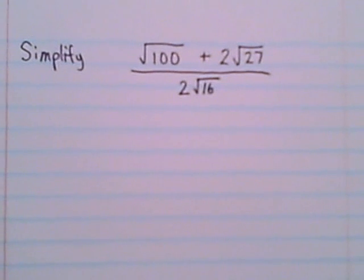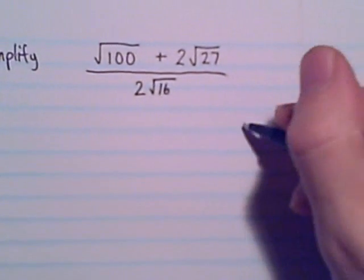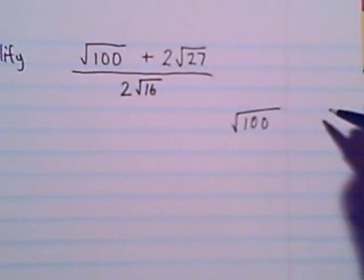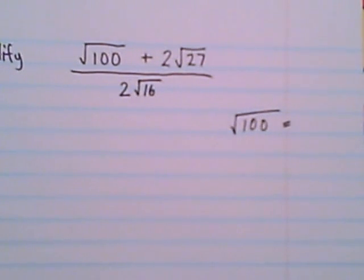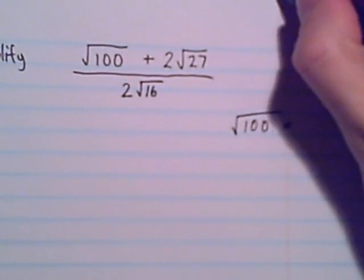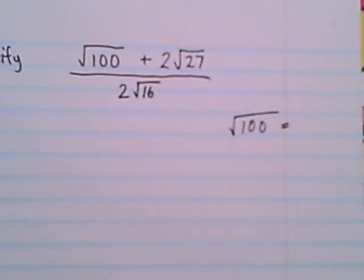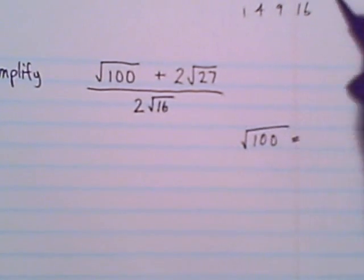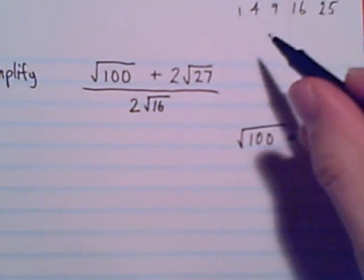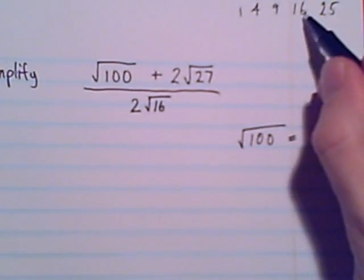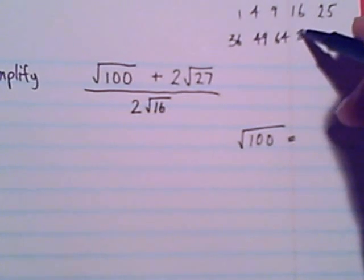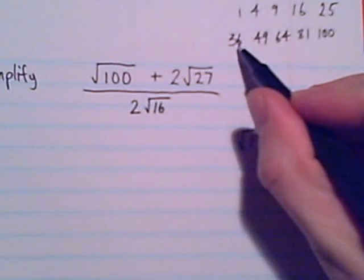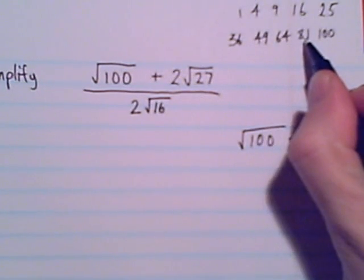Can any of these radicals be simplified? We can definitely do some simplifying for each one. Square root of 100: I'll be honest, 1 through 10, the perfect squares you should know. Any number that we can get to from doing something times itself, you should have in memory. So we're talking about 1, 4, 9, 16, 25, 36, 49, 64, 81, 100. You should know these as 1×1, 2×2, 3×3, 4×4, 5×5, 6×6, 7×7, 8×8, 9×9, 10×10.